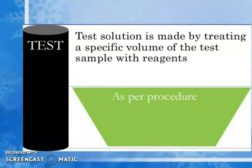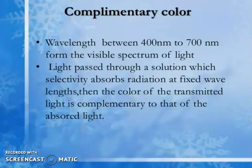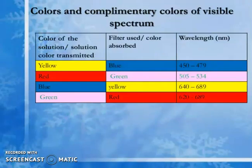Complementary color: wavelengths between 400–700 nm form the visible spectrum. When light passes through a solution, it selectively absorbs radiation at a fixed wavelength; the color of the transmitted light is complementary to that of the absorbed light. Color and complementary color: solution colors and their transmitted colors include yellow, red, blue, and green. Filter use and colors of absorption (with wavelength ranges): yellow/green filter (450–479 nm), red/green filter (505–534 nm), blue/yellow-green filter (640–689 nm), and green/red filter (620–689 nm).